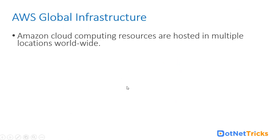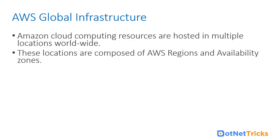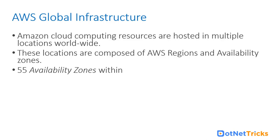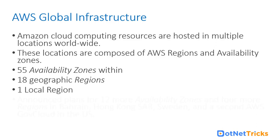Understanding AWS global infrastructure in more detail: Amazon cloud computing resources are hosted in multiple locations worldwide — geographically distinct regions where AWS infrastructure lies and provides services. These regions are geographically isolated and self-sufficient. If a natural calamity strikes any particular country or region, other regions remain unaffected — an important consideration for business continuity plans. Currently there are 55 availability zones inside 18 geographic regions.